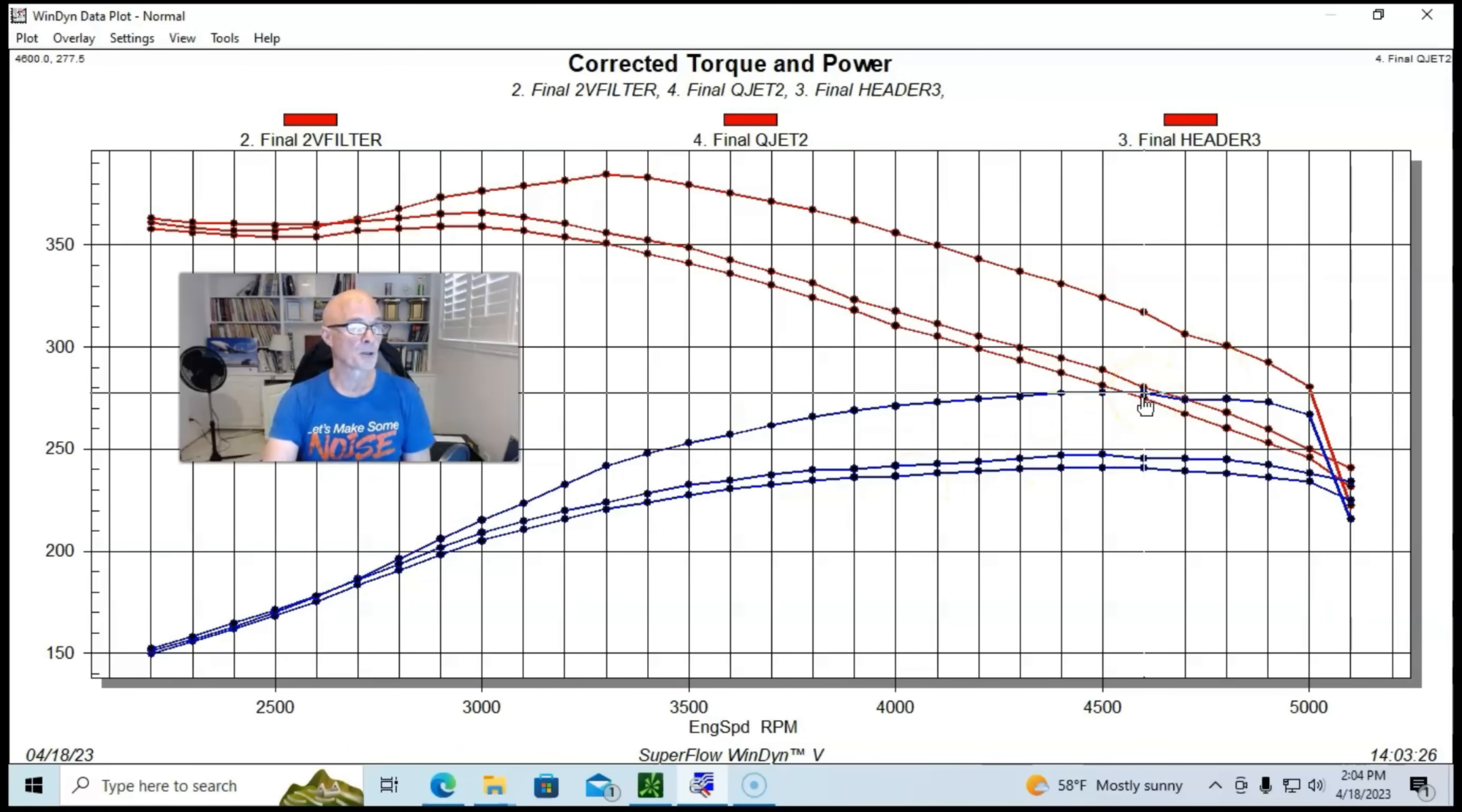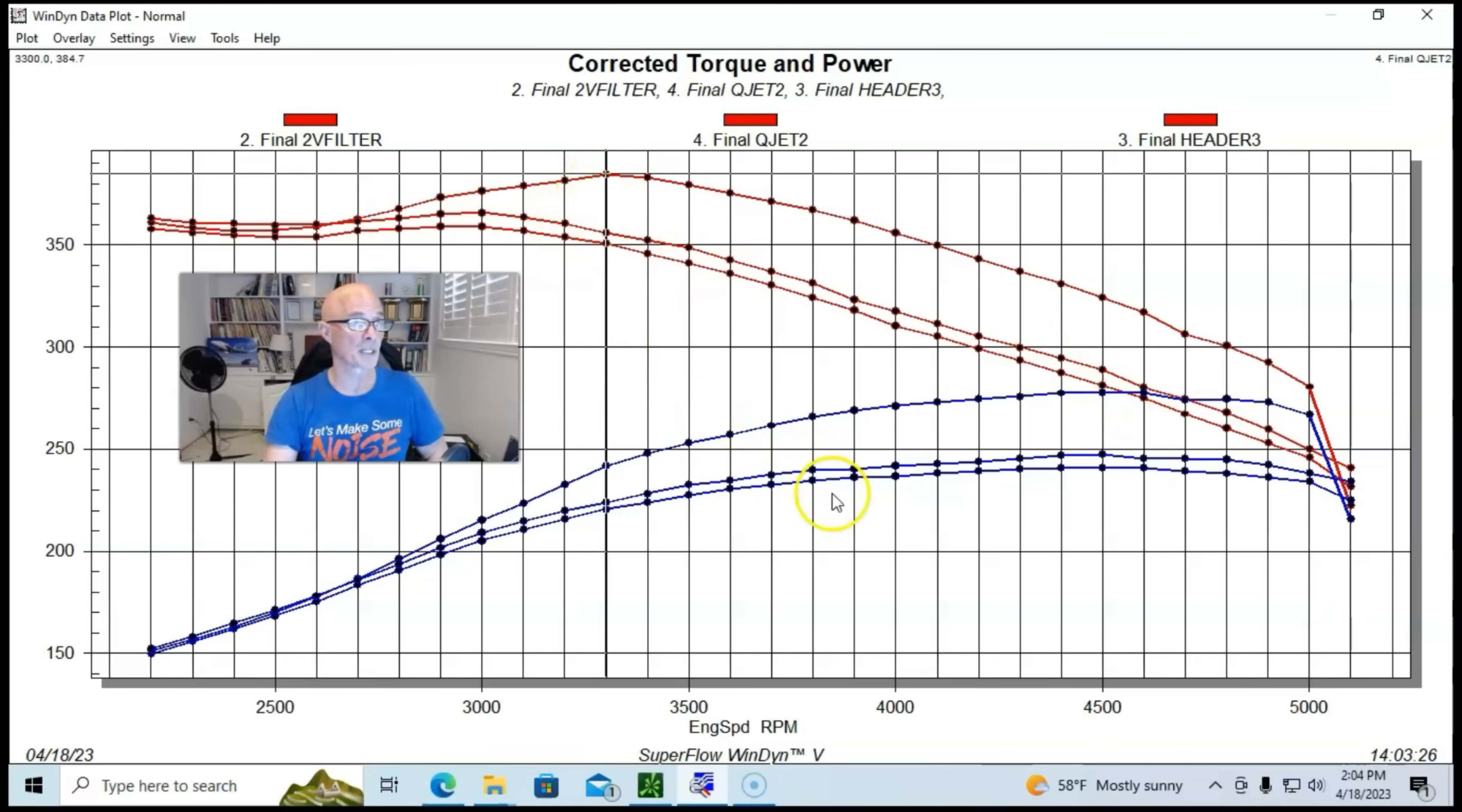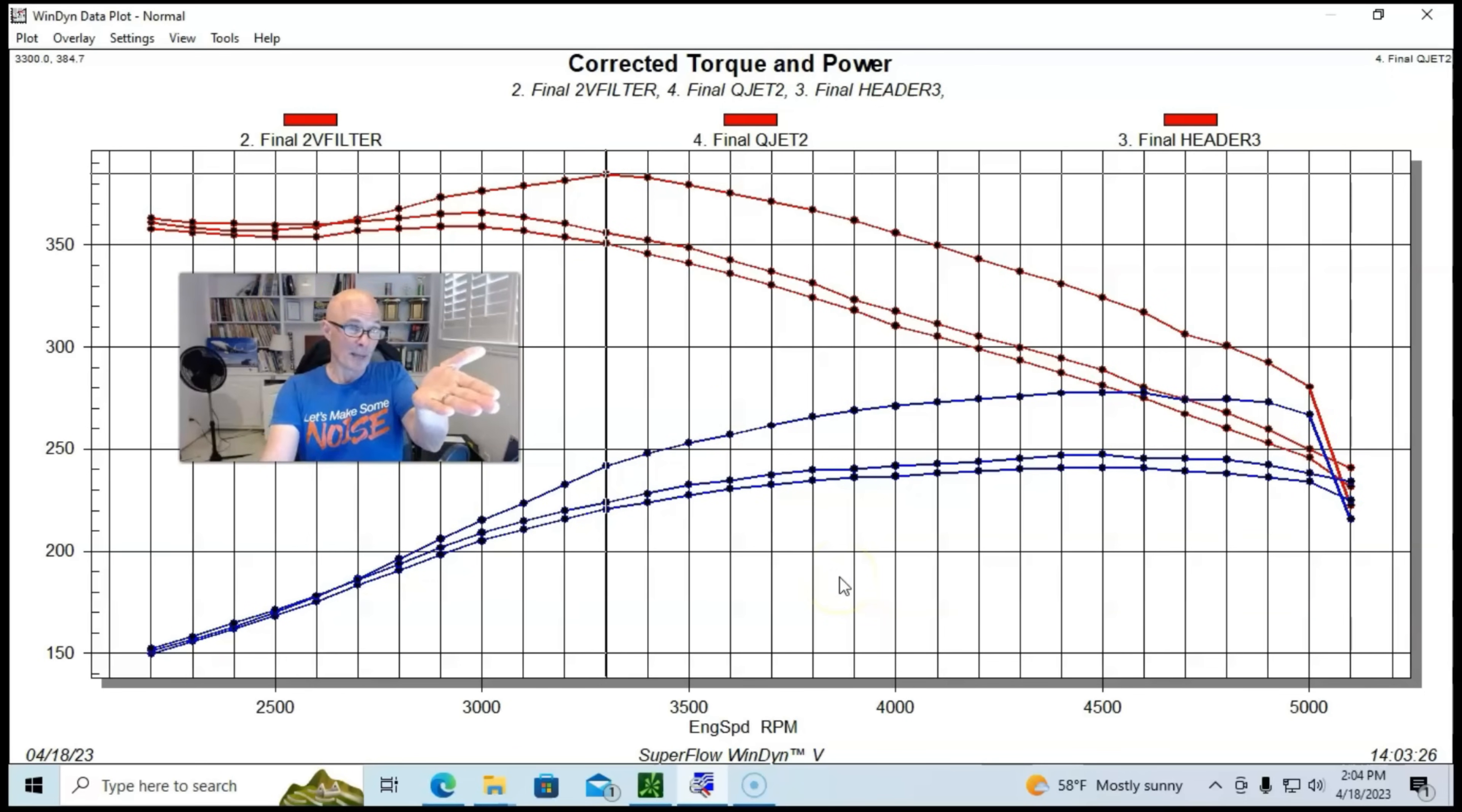As you can see, the four-barrel manifold offered a good power gain - not only a lot more peak power but a lot more peak torque. Peak power checked in at 278 horsepower and peak torque checked in at 385 foot-pounds. It looks like the four-barrel made every bit as much torque down below 2500 as the two-barrel did.